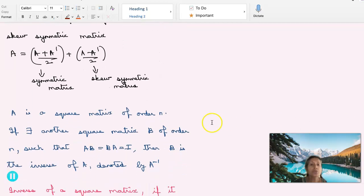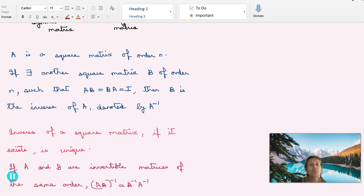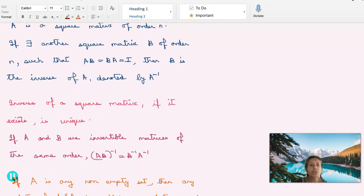If A is a square matrix of order N, if you can find another square matrix B of order N such that AB equal to BA equal to I, then B is the inverse of A denoted by A inverse. So for A inverse, AB equal to BA equal to I. What about inverse of a square matrix? Can there be two inverses? No. Inverse of a square matrix, if it exists, is unique. If A and B are invertible matrices of the same order, then AB inverse equal to B inverse A inverse.